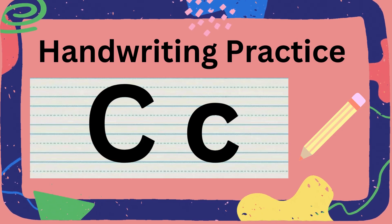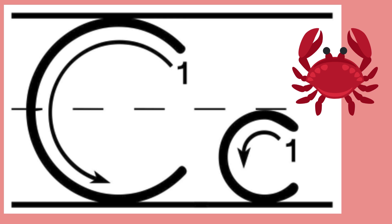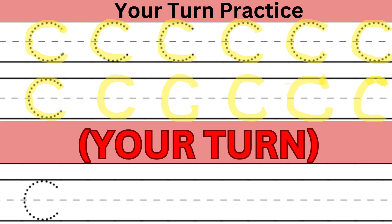Handwriting practice. This week we will be practicing writing the letter C. Let's first look at how to write an uppercase C. Look at the diagram shown and follow the steps to write an uppercase C. Now let's look at how to write a lowercase C. Look at the diagram shown and follow the steps to write a lowercase C. These are examples of uppercase C's written. Now you practice writing uppercase C's.